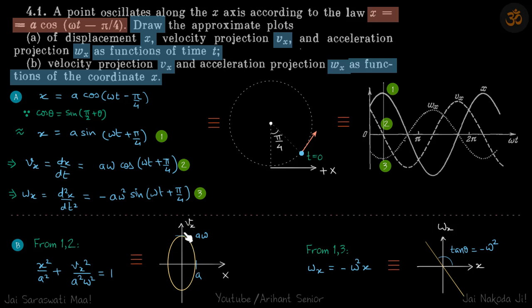Now third, acceleration versus x. Again we will square and add - actually not square and add, we'll just divide it - so we'll get rid of the sine and we'll get acceleration as minus omega squared x, which is a straight line and the slope of the function is minus omega squared. So that is it.